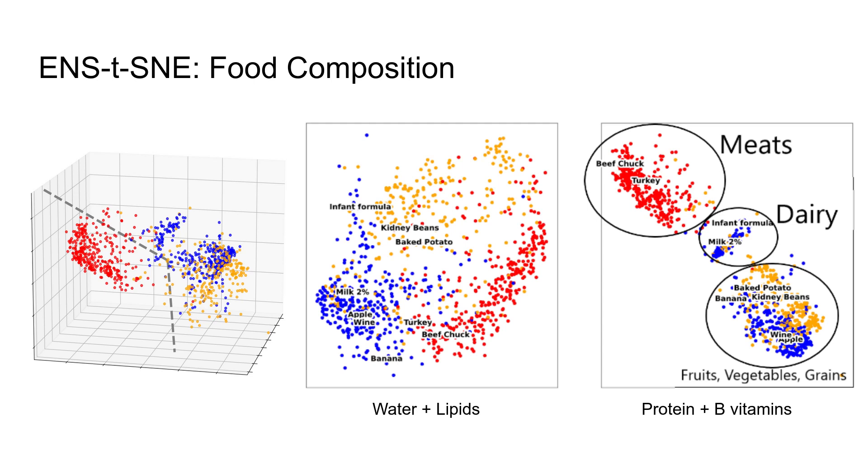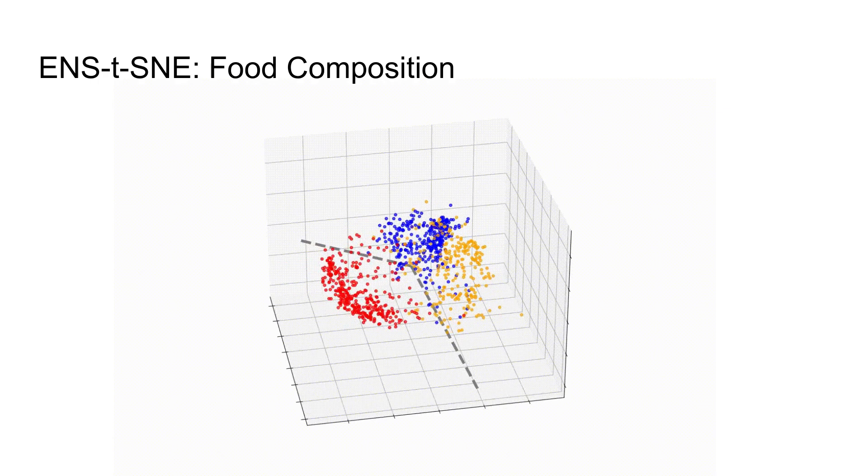In the second view, the red cluster has stayed distinct, but the blue and orange clusters have mixed, creating two new clusters. One that consists of dairy products like milks and yogurts, and another that consists of other meatless foods such as fruits, vegetables, and grains.